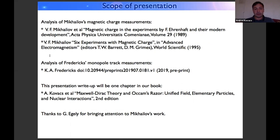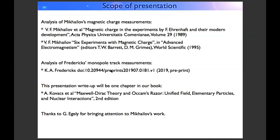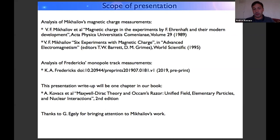Here are the ingredients I will use. Firstly, I will use an analysis of Mikhailov's magnetic charge measurements — you can see the references for those publications. Second, I will use Fredericks' magnetic monopole track measurements, which is not peer reviewed — he only published a preprint. I will also use the theory from the book I am editing, called Maxwell-Dirac Theory and Occam's Razor, where we develop electron theory that also applies to magnetic monopoles.